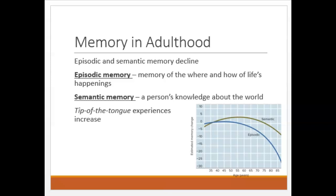In adulthood, working memory and processing speed peak at around age 45 and gradually start to decline around 57, but more so for some types of memory than others. Episodic memory is more affected — that is memory of the where and how of life's happenings, such as what you ate for breakfast or where you were on Tuesday morning. Semantic memory is a bit more stable. Semantic memory is a person's general knowledge of the world, such as remembering the rules of a game you like to play or the names of famous people. What happens with semantic memory is that we start to have more tip-of-the-tongue experiences, where you know the word you're trying to say but can't quite remember it.